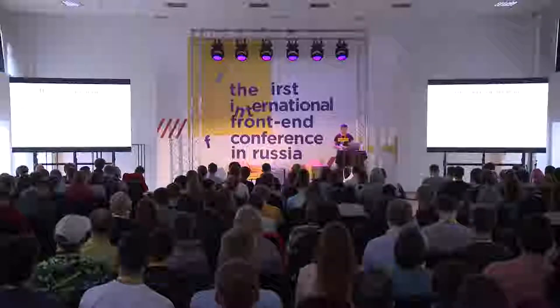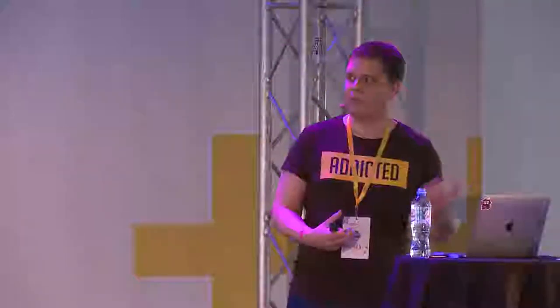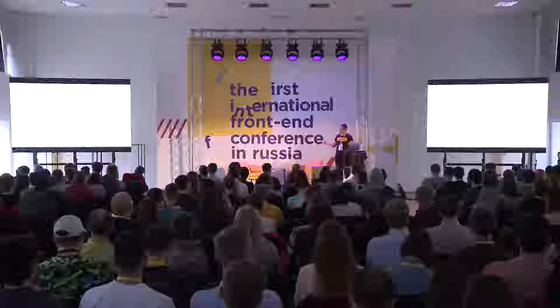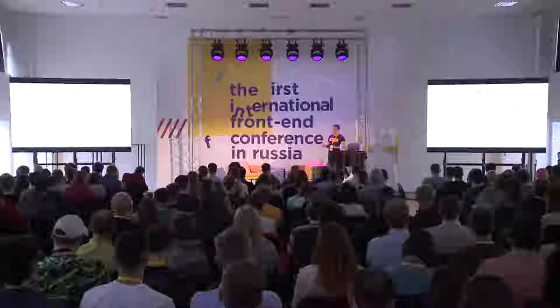Another example is about custom properties. Many developers are confused about why a case like this doesn't work. It doesn't work because var substitution works at the token level, not at the string level — it's not a concatenation of text. It's a merge of two token sequences. We get a sequence of two tokens: a number token and an ident token, instead of the dimension token that the property expects. A little summary: everything happens for a reason, and thinking about CSS syntax in terms of tokens makes many rules clear.